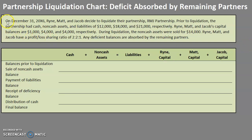So here we have on December 31st, the last day of the year, Ryan, Matt, and Jacob decide to liquidate their partnership, RMJ Partnership. Prior to this liquidation, the partnership had cash, non-cash assets, and liabilities.